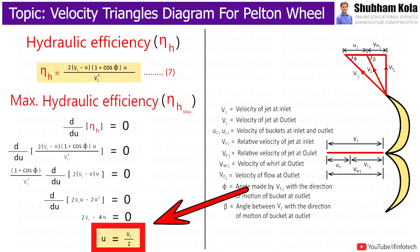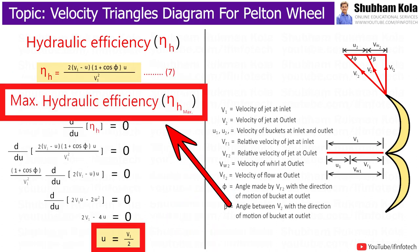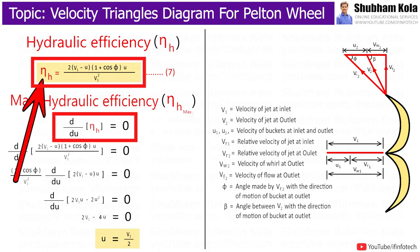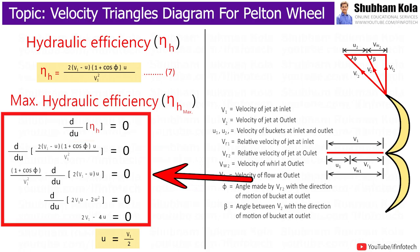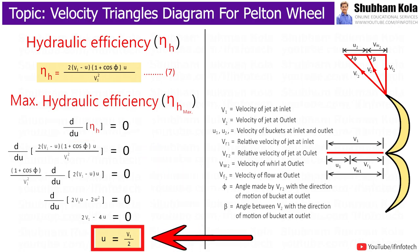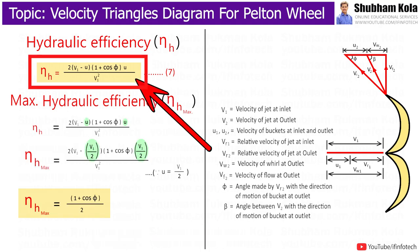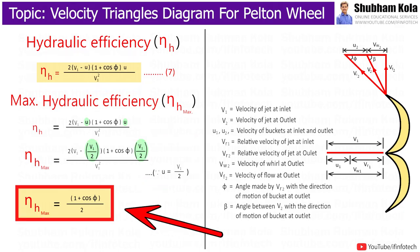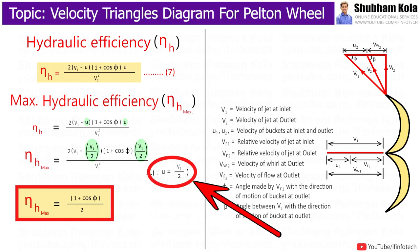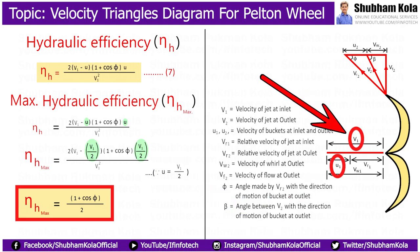We can also calculate the condition for maximum hydraulic efficiency by differentiating η_h with respect to U and equating to zero. After differentiation, we get U = V1/2. Substituting this into Equation 7 and simplifying gives the maximum hydraulic efficiency. This simply means that when the velocity of the bucket is half the velocity of the jet, hydraulic efficiency will be maximum.